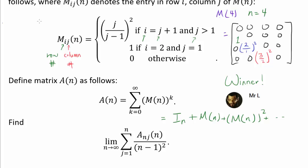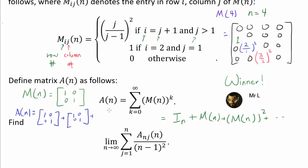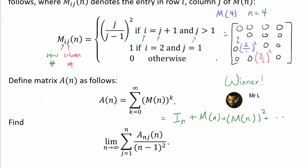A natural question is whether A of N is even well-defined, because when we add infinitely many powers of M of N, some entries might diverge. For example, if M of N were the identity matrix, then every power is also the identity matrix, so A of N would be a sum of infinitely many identity matrices — the top-left entry would diverge. But as we'll see, for the M of Ns we care about, this definition works fine, and the reason will be revealed soon.